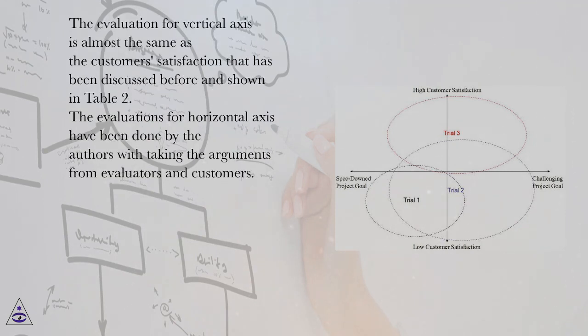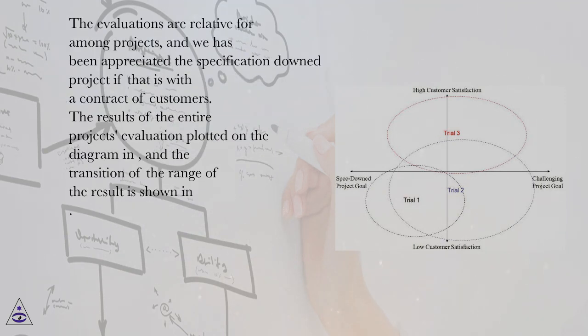The evaluation for vertical axis is almost the same as the customer satisfaction that has been discussed before and shown in table 2. The evaluations for horizontal axis have been done by the authors with taking the arguments from evaluators and customers. The evaluations are relative for among projects, and we have appreciated the specification down project if that is with a contract of customers.